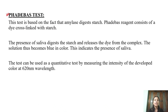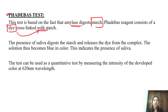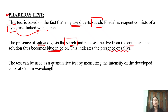The next test is the Phadebas test. It is based on the fact that amylase digests starch into monosaccharides and polysaccharides. The reagent consists of a dye cross-linked with starch. If saliva is present, the amylase digests the starch and releases the dye from the complex. The solution thus becomes blue in color, which is visible and indicates the presence of saliva — this is a positive reaction.